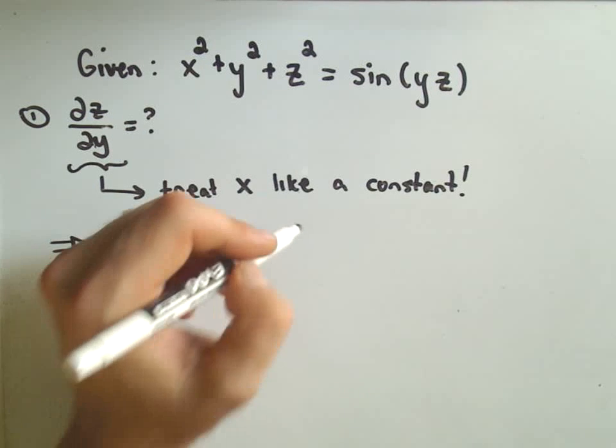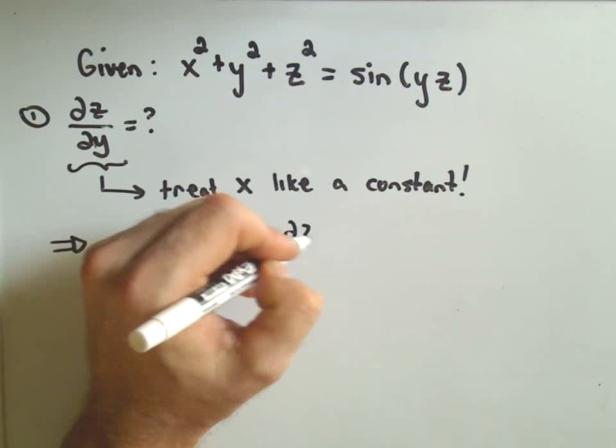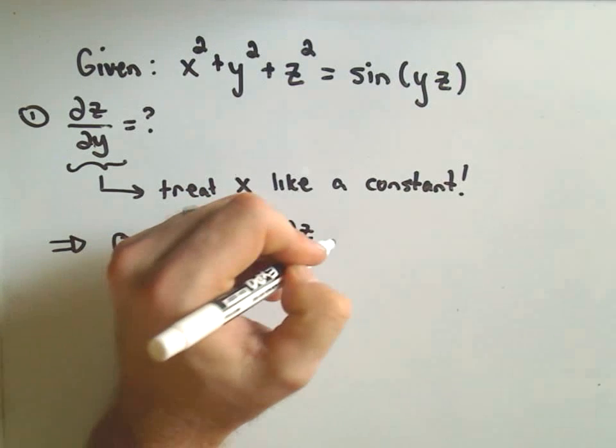But again, z is our dependent variable. So we have to remember to tack on the partial of z with respect to y.